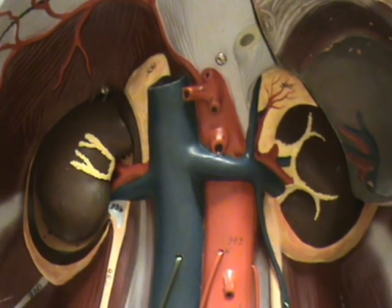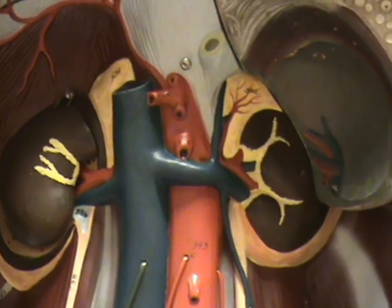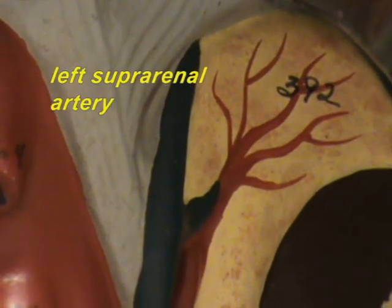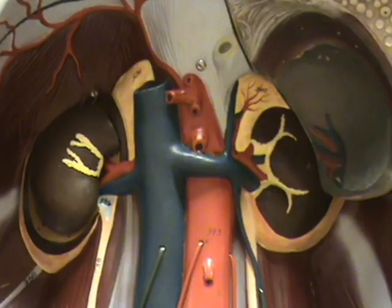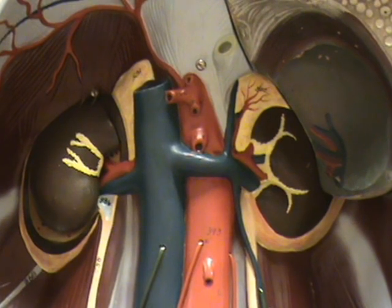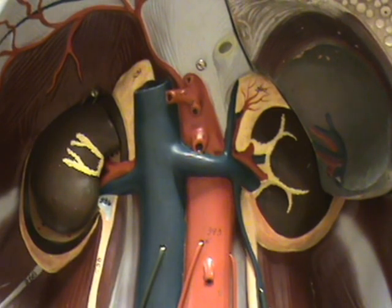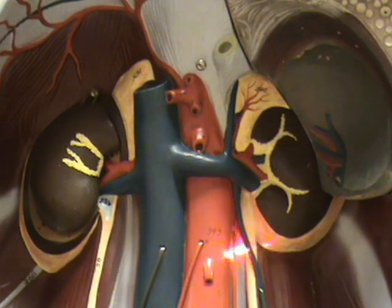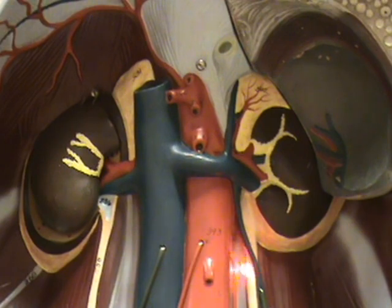Let's take a closer look at the suprarenal arteries — right over here you can see a suprarenal artery. Another pair of organs which you don't see right over here but embryologically originate from this region are the gonads, which are the sex organs — the testicles in the male and the ovaries in the female. You can see that this was where these organs originated in development because their arteries come off the abdominal aorta at this point right over here.